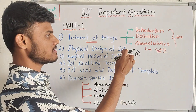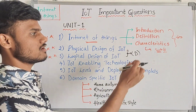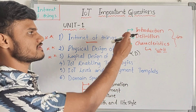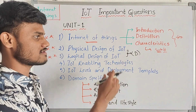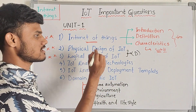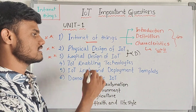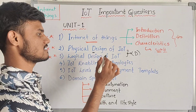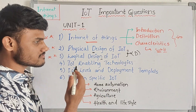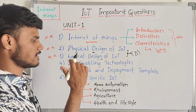Before answering a question, first draw an introduction, then the diagram. There are four layers and seven components. That is the key point.